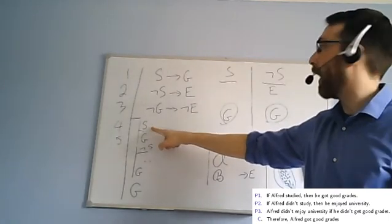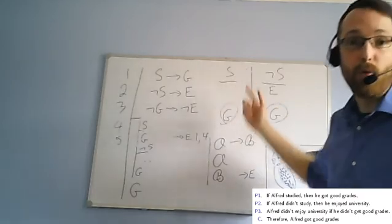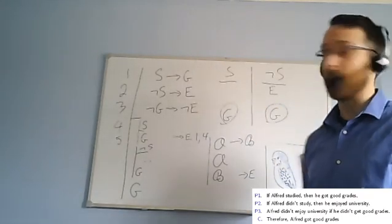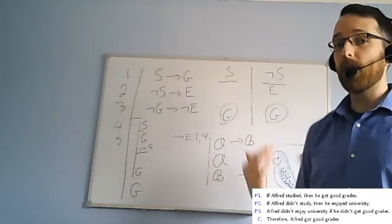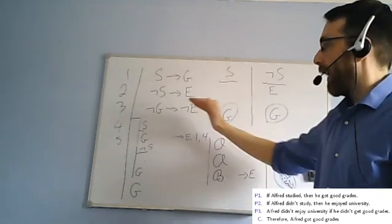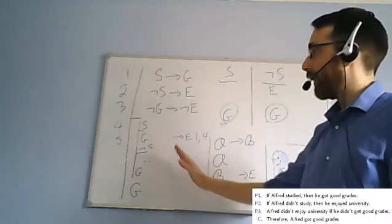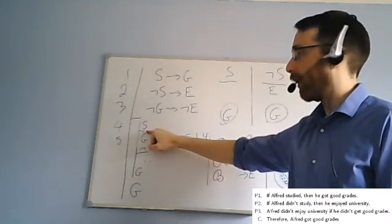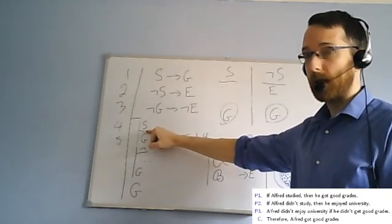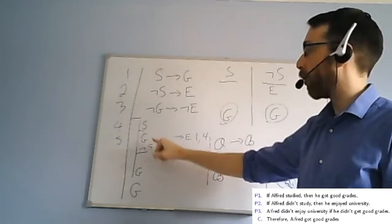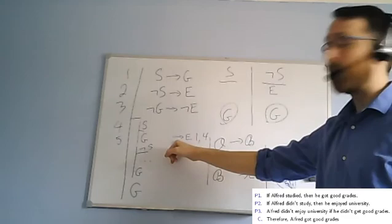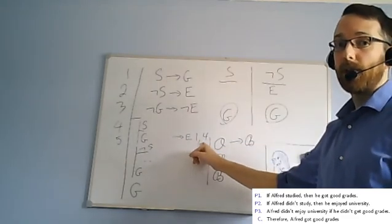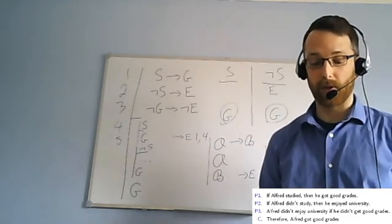But when you're making an assumption, there's no need to answer the question how do you know that. If you ask me, how do you know Alfred studied? I'll say I don't, I'm just assuming it to see what would be true in that case. How do I know Alfred didn't study down here? I don't, I'm just assuming it. So this is how you can tell when you're done. Every line, every single line needs to have either a horizontal little notch underneath saying this is just an assumption, or it needs to answer the question how do you know, and the way we answer that is by naming a rule and naming the lines it applies to. That's what a natural deduction proof looks like.